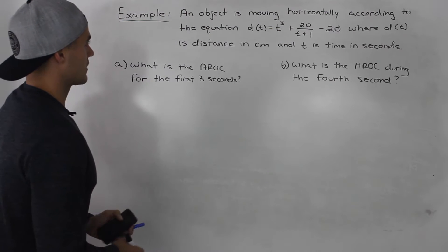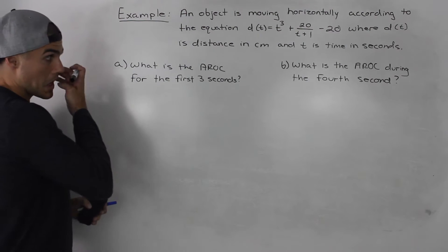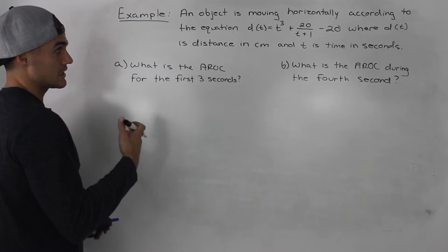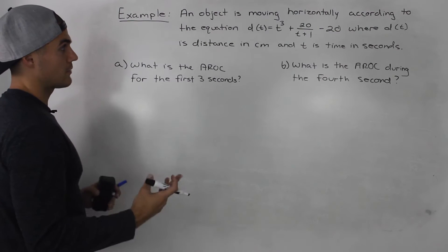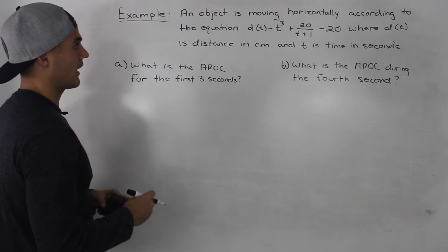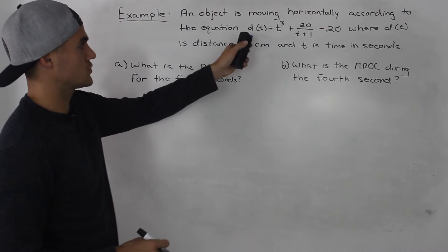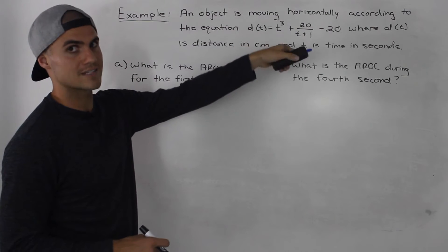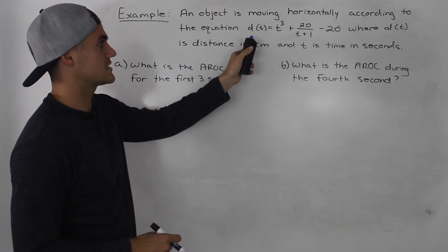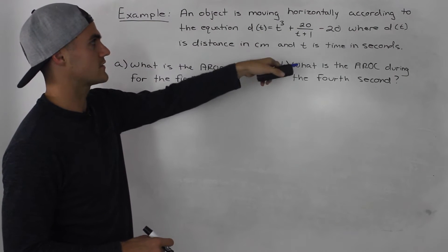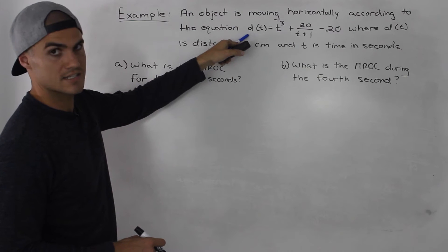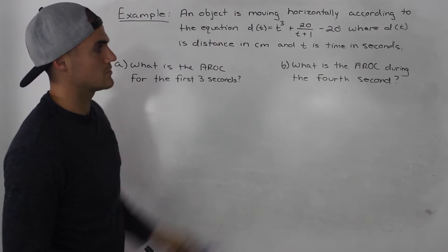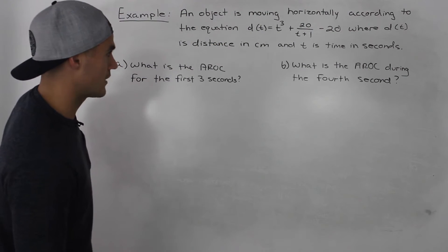The first thing is to figure out what's the dependent variable and what's the independent variable. From this equation we can tell that the distance is modeled by the time, so the distance depends on the time. The distance is the dependent variable and time is the independent variable.